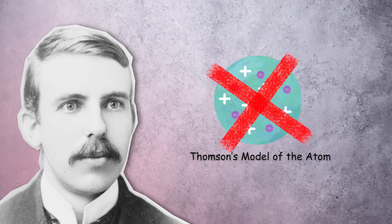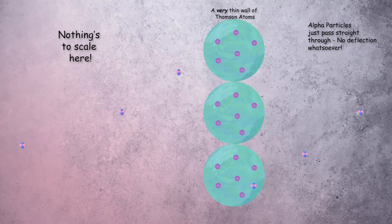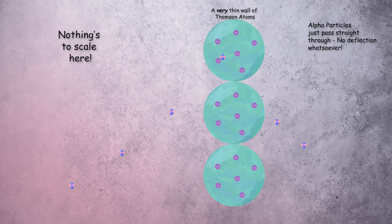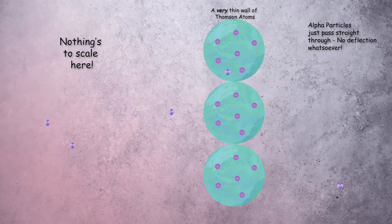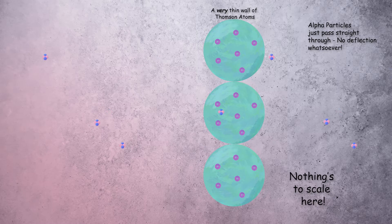Rutherford knew the current model of the atom must be wrong, because Thomson's model simply could not explain the experimental results. According to Thomson's model, an atom's positive charge is spread out over such a large volume that it's simply too weak to cause any significant electrostatic deflection on the incoming alpha particles, and the electrons are far too small to have any significant effect either.